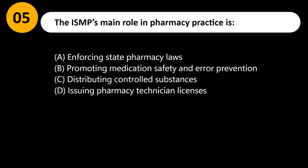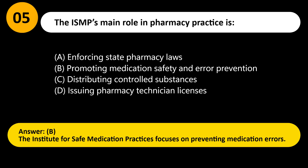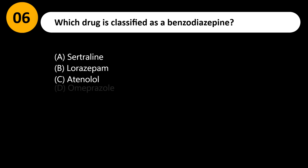What is the ISMP's main role in pharmacy practice? A) Enforcing state pharmacy laws, B) Promoting medication safety and error prevention, C) Distributing controlled substances, D) Issuing pharmacy technician licenses. Answer: B. The Institute for Safe Medication Practices focuses on preventing medication errors.